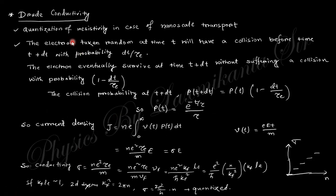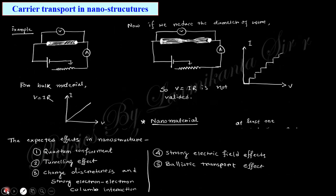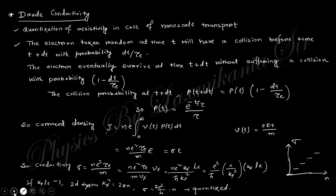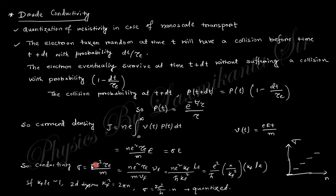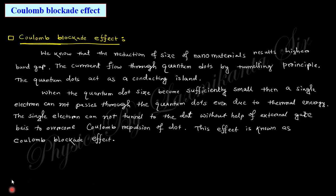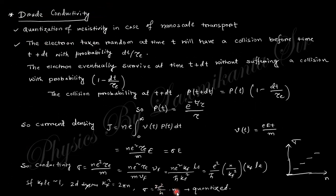Now we discuss the Drude conductivity, which explains why conductance is quantized. The quantization of conductance in nanoscale transport is derived as follows: an electron taken at random at time t will have a collision probability per unit time. The electron surviving to time t+dt without collision has probability 1 minus dt/tau_e. Integrating, you obtain the current density, and from j equals sigma times E, the conductivity comes out as sigma equals 2e²/h times n, where n is a natural number. This is quantized, explaining the experimental result.